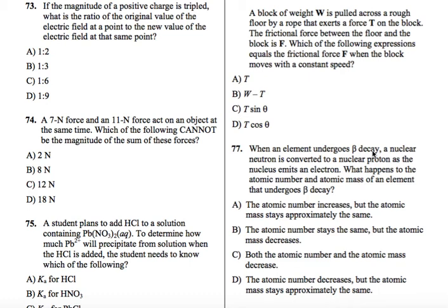So this question says, if the magnitude of a positive charge is tripled, what is the ratio of the original value of the electric field at a point to the new value of the electric field at that same point?